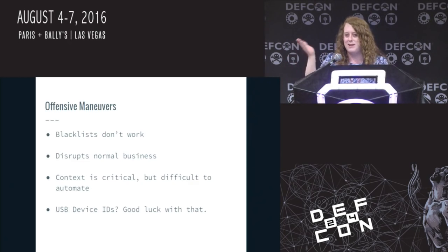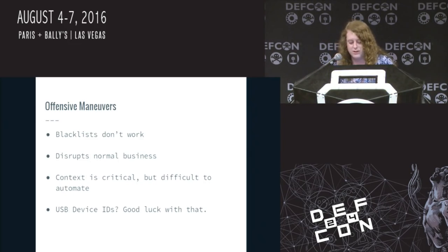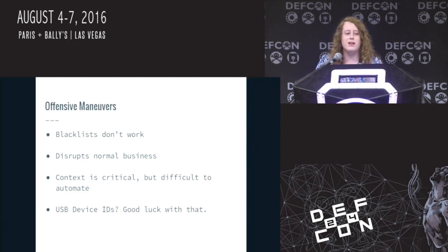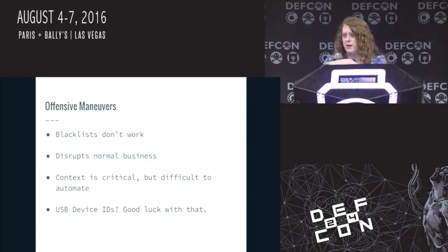There's a balance there and it's for companies to figure out what's more risky. Context is critical but difficult to automate. You can do deep packet inspection — DPI can do all kinds of fun things — but if data is inside a stego'd squirrel picture, good luck telling your system to detect that.